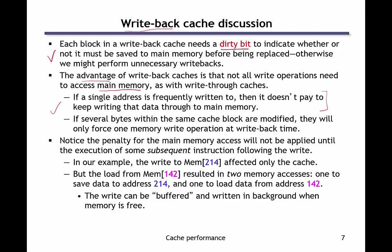The consequence is that writes to a cache block are fast, but we've moved some of the penalty of copying back to main memory to the point when we bring in the next block. Our writes only affect the cache directly, but when we load a new value in, it creates two memory accesses: one to write the dirty block back to main memory, and one to bring the new data into the cache. We can also use a write buffer here to do the writeback in the background, the same way as with write-through.